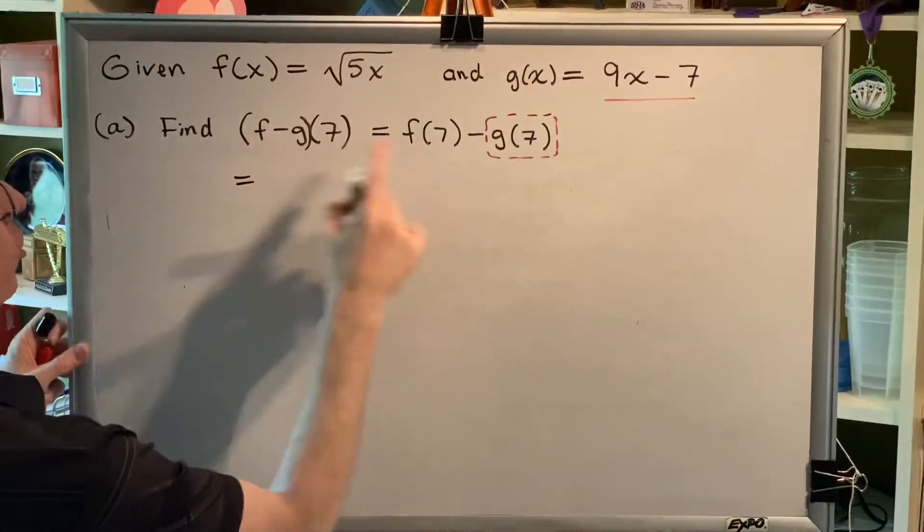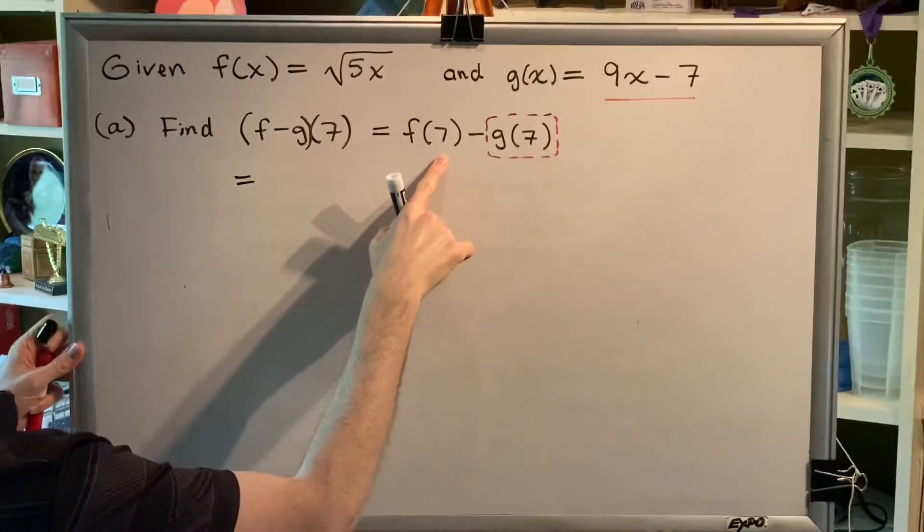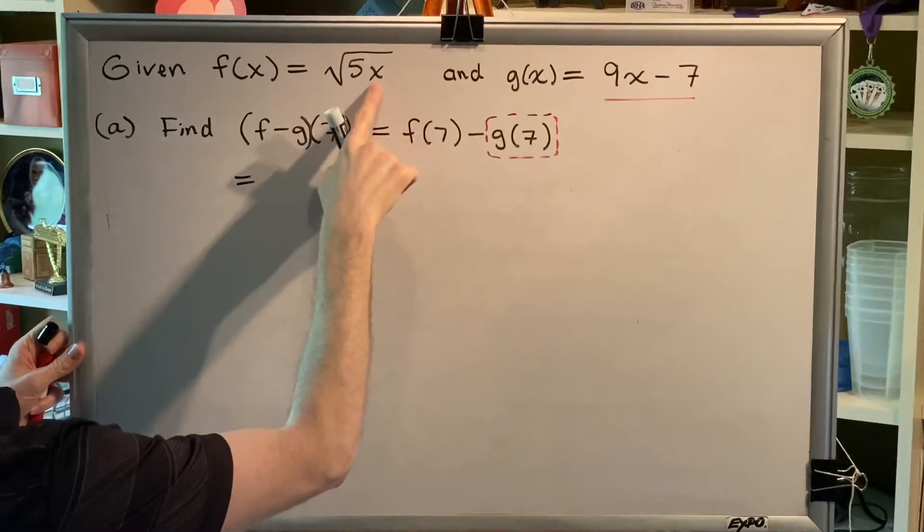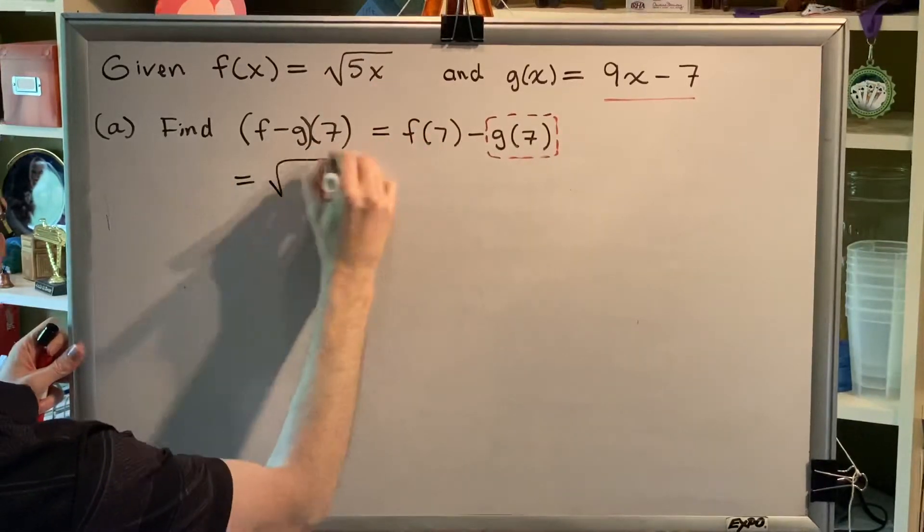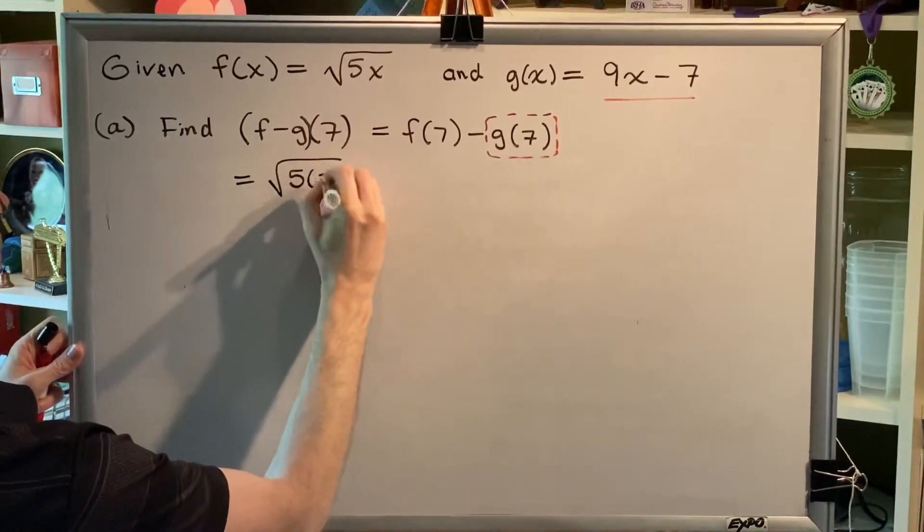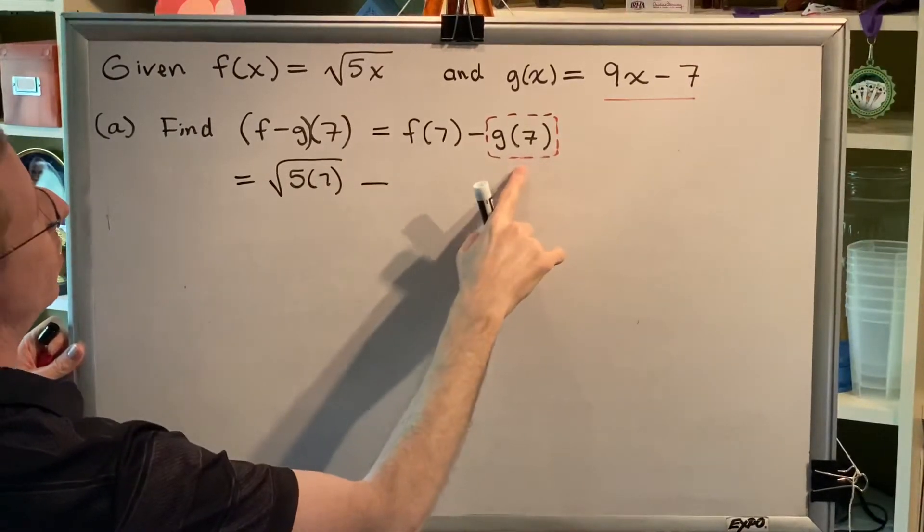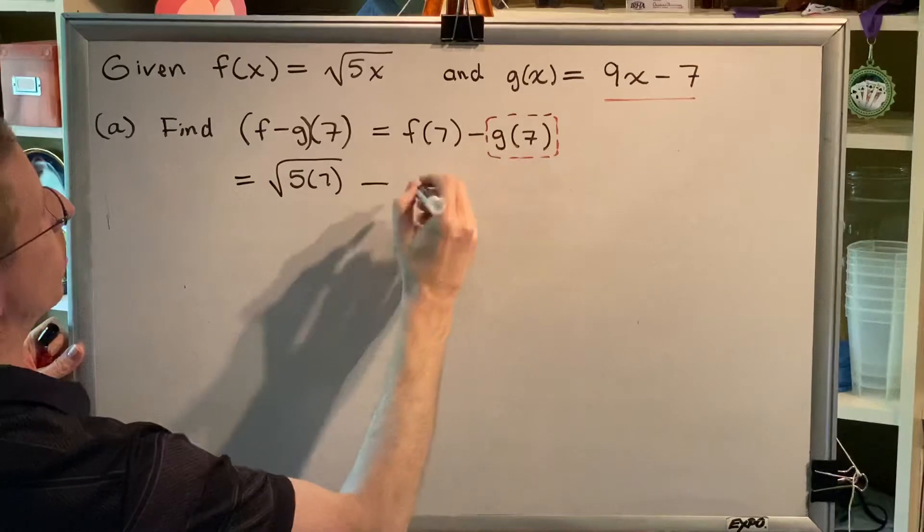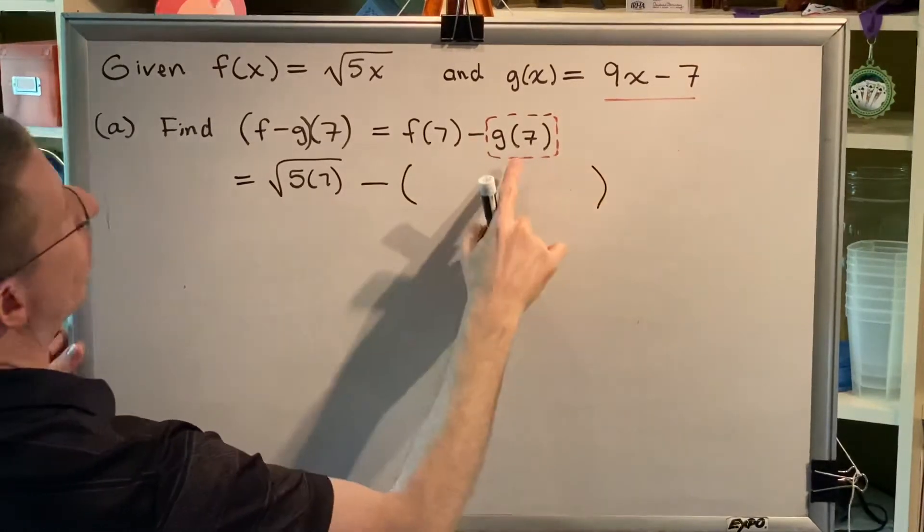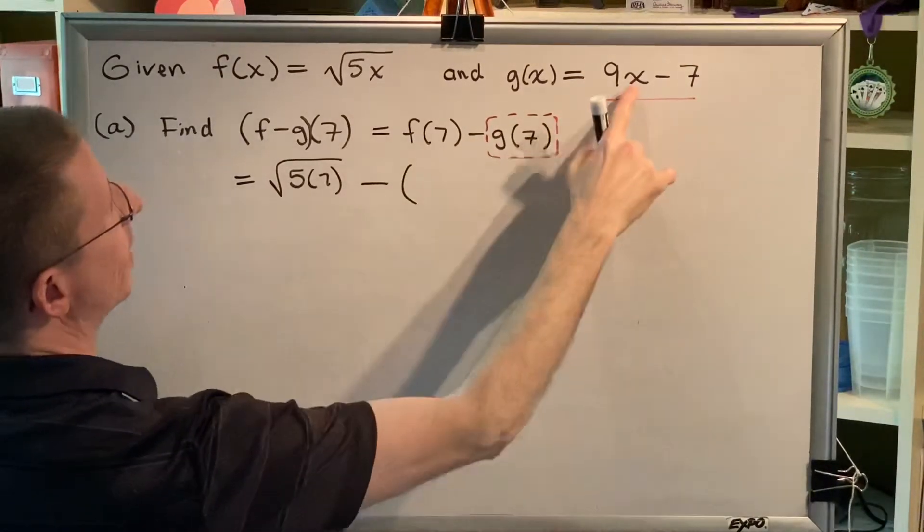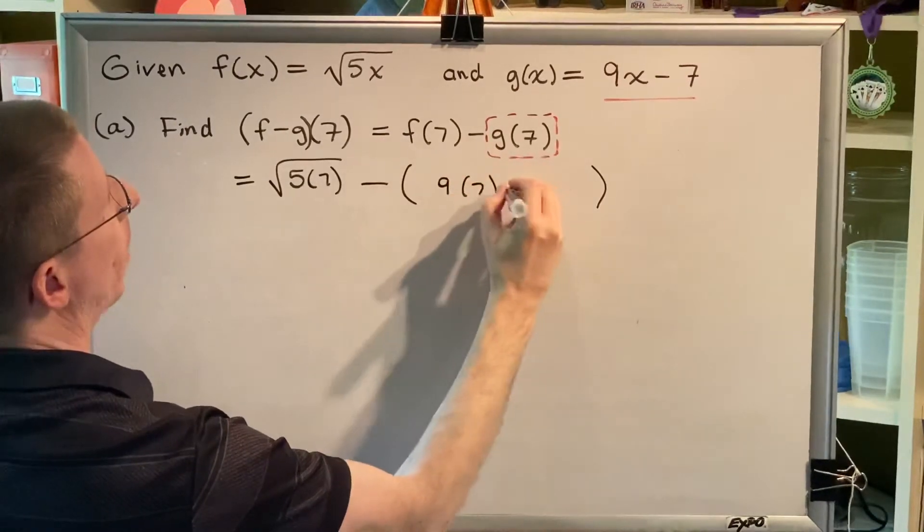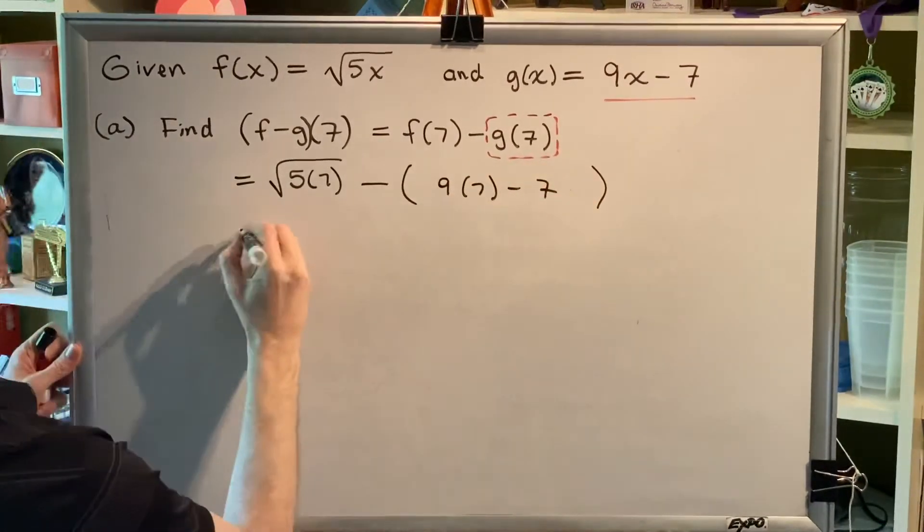Alright, so what are we going to get here? Let's do f(7) first. Well, f(7) means replace this x with 7, so we have the square root of 5 times 7, then the subtraction sign, then parentheses because we are replacing something that's being subtracted, then g(7), which means put a 7 in here: 9 times 7 minus 7.